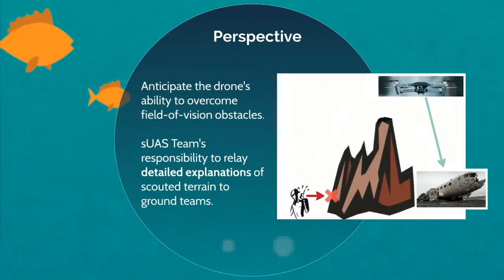A drone can overcome the field of vision issues affecting ground teams. You should anticipate and capitalize on this advantage by maintaining situational awareness and recognizing opportunities as they develop — to see over something tall, scout an area quickly, or check on top of a hill. Keep in mind that whatever you see, be prepared to relay the information in exacting detail to the ground team.